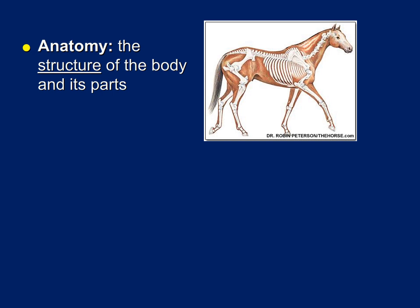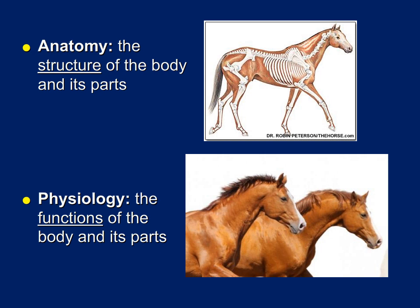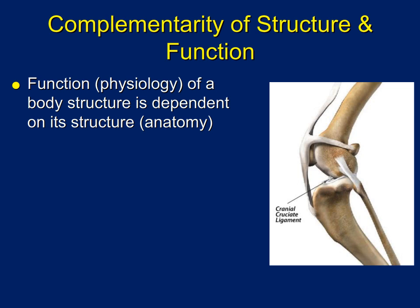Physiology, on the other hand, is the functions of those particular body parts. For example, what's the function of the humerus, or the radius, or the ulna? They all have particular functions. One of the core concepts of anatomy and physiology is the complementarity of structure and function, which basically means that the function, or physiology, of a particular structure is dependent on the anatomy, or the shape of that structure.